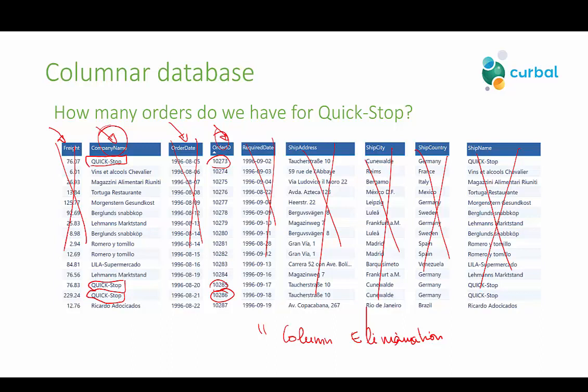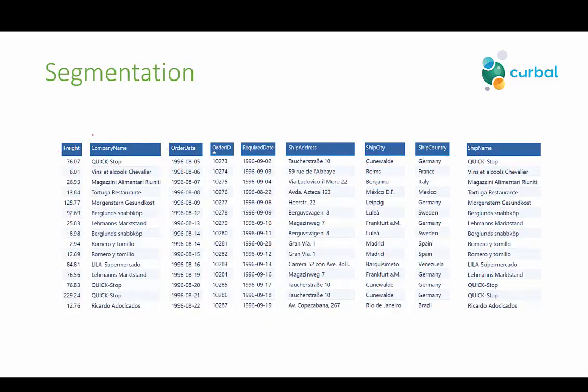You might think that VertiPack is storing all this in one chunk, but it's actually doing something much smarter. What VertiPack is doing is called segmentation — basically dividing these columns into partitions, or segments. For PowerPivot, it is 1 million rows per segment. For SSAS, it is 8 million. And of course, the bigger the segment, the higher the chances of better compression, because you get more data and can compress it more.